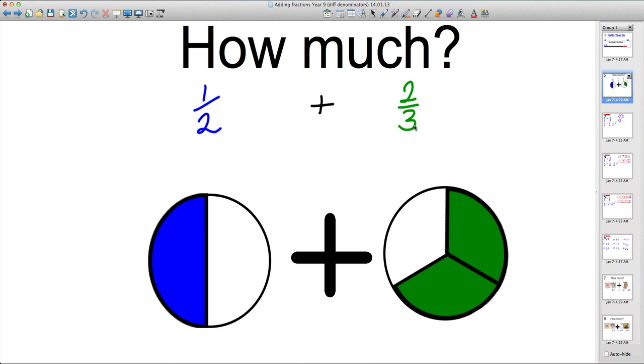So 1 half and 2 thirds. What we could do is instead of splitting this circle into halves we could split it into 6. Imagine I split that circle into 6 and now actually a half is the same thing as 3 sixths.